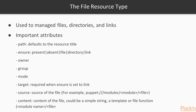You can also specify the owner and the group of the file. You can use mode to specify the access mode of the file. Then there is the attribute target, which is only required if you would like to create a link, and it points to the destination of the link. Then there is the source attribute, which specifies the source of the file, which could be inside a module.